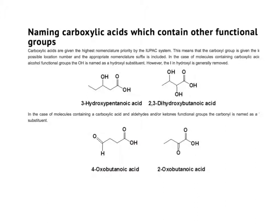Spending a couple of minutes going back over naming carboxylic acids when another functional group is present: in this example we count five carbons with single bonds only, and because of the carboxylic acid we call this pentanoic acid. We also have a hydroxyl group — carbon one is the carboxyl carbon, so the hydroxyl group comes off of carbon three, and we would call that 3-hydroxypentanoic acid.